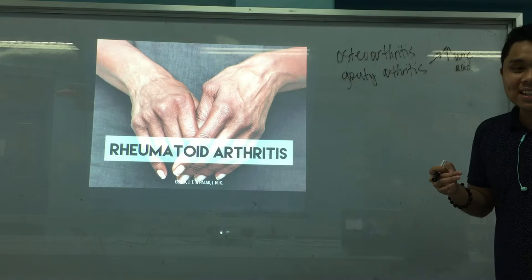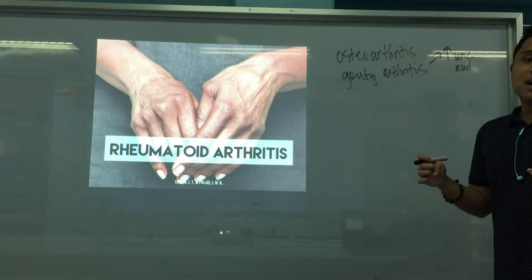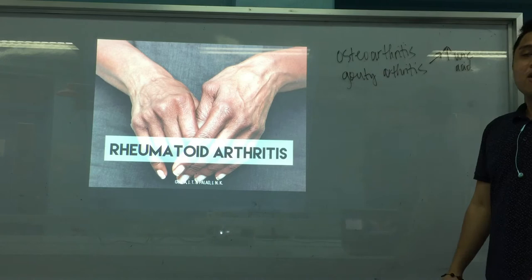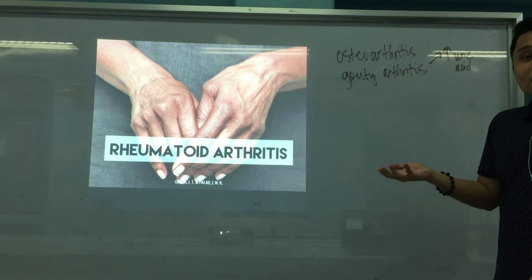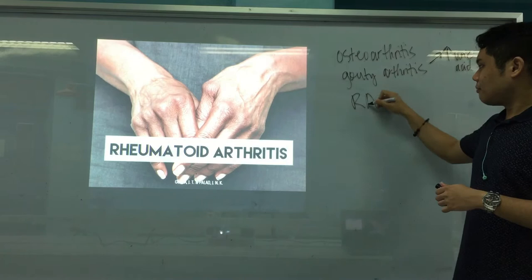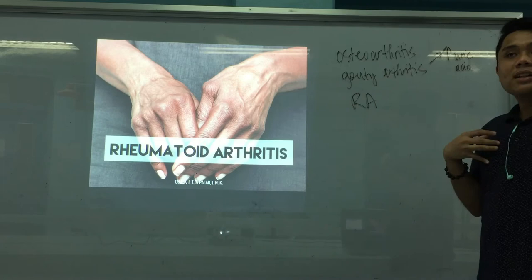Those are depositions of excess uric acid in your joints. It's difficult to move because of these crystals. And the third type is, of course, your RA — rheumatoid arthritis. Rheumatoid arthritis is an autoimmune disease, and that's what we're going to talk about now.